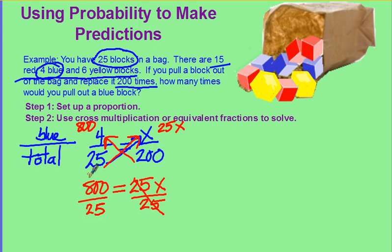25 goes into 80 three times with five left over, so 32x. x equals 32. Now it's a word problem, so answer in the word. 32 times will be blue.